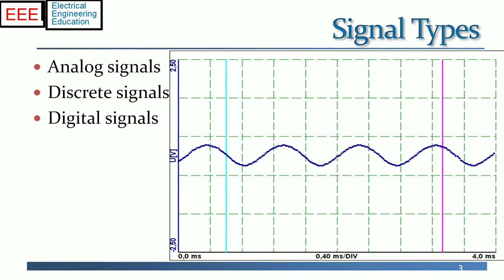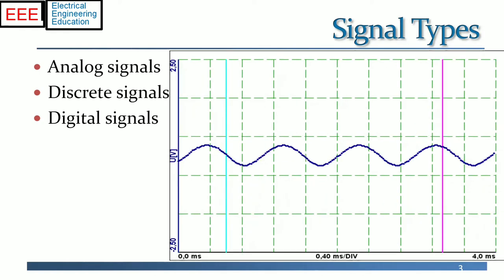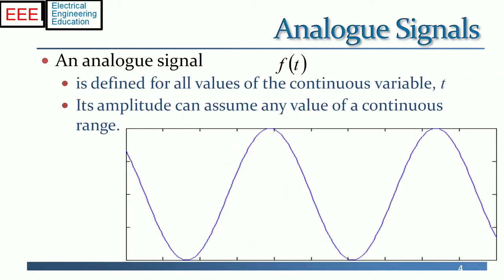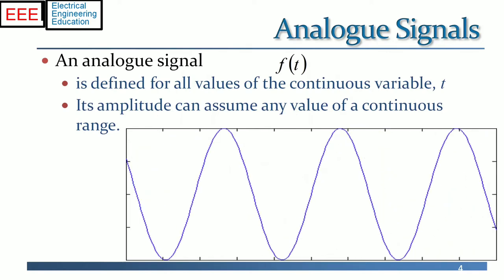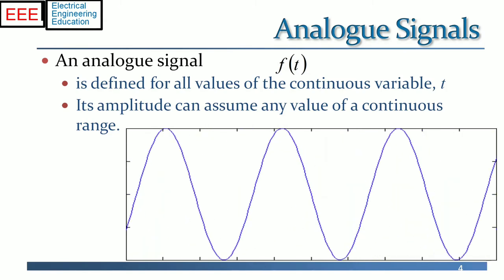There are three basic types of signals including analog, discrete, and digital signals. An analog signal is defined for all values of the continuous variable t. Its amplitude can assume any value of a continuous range.